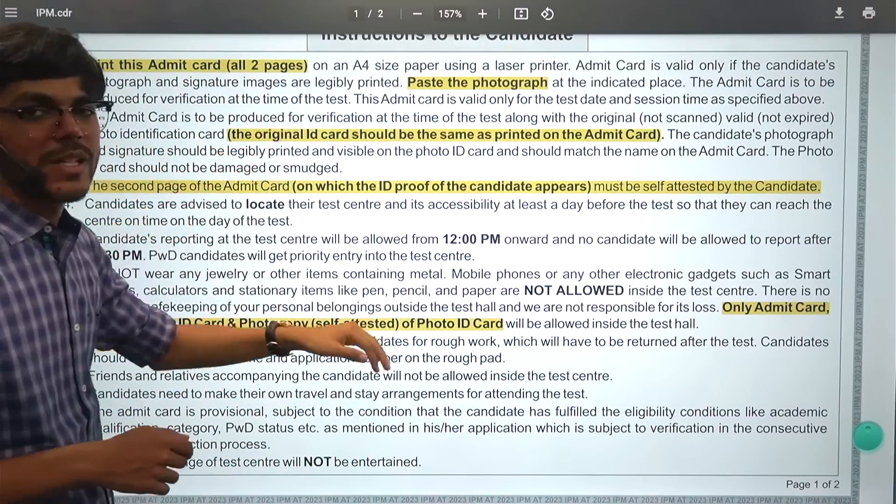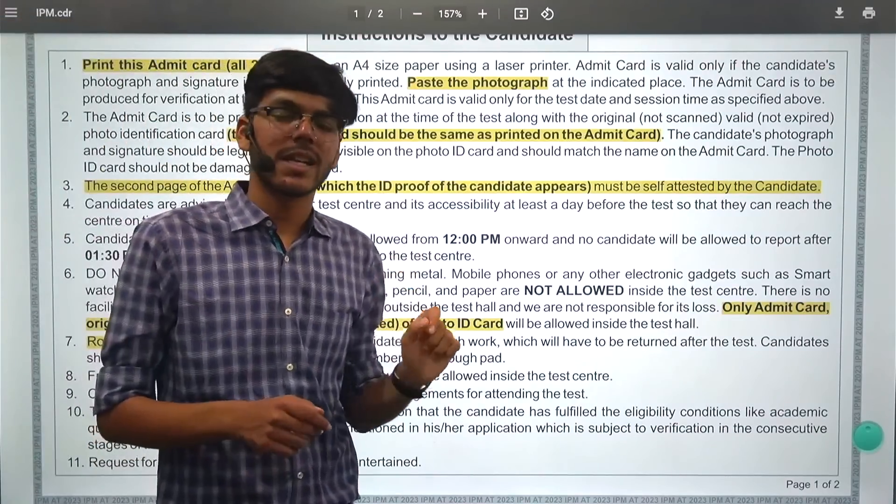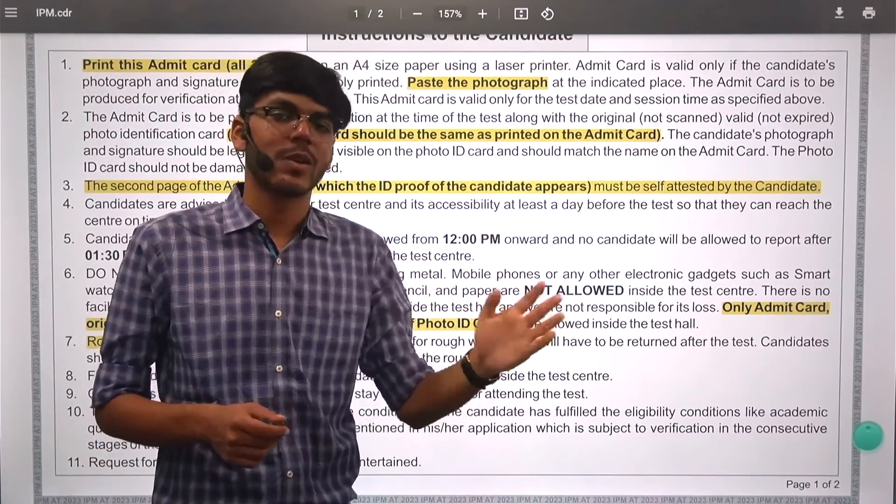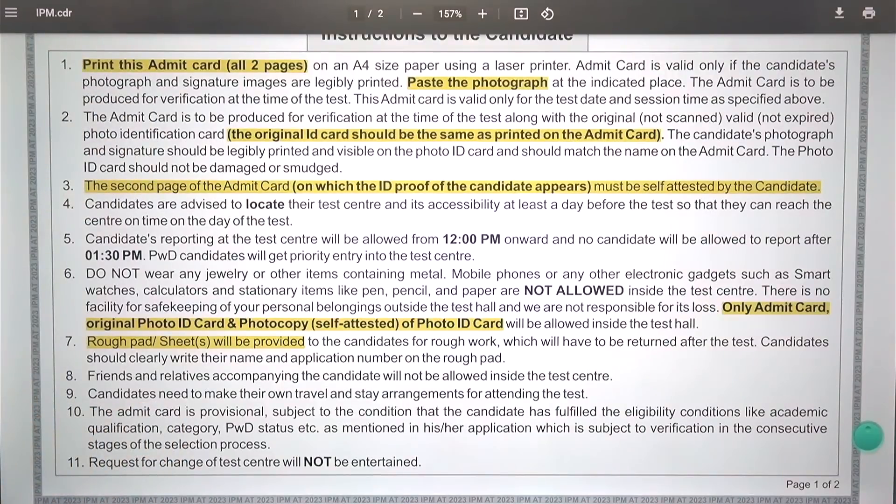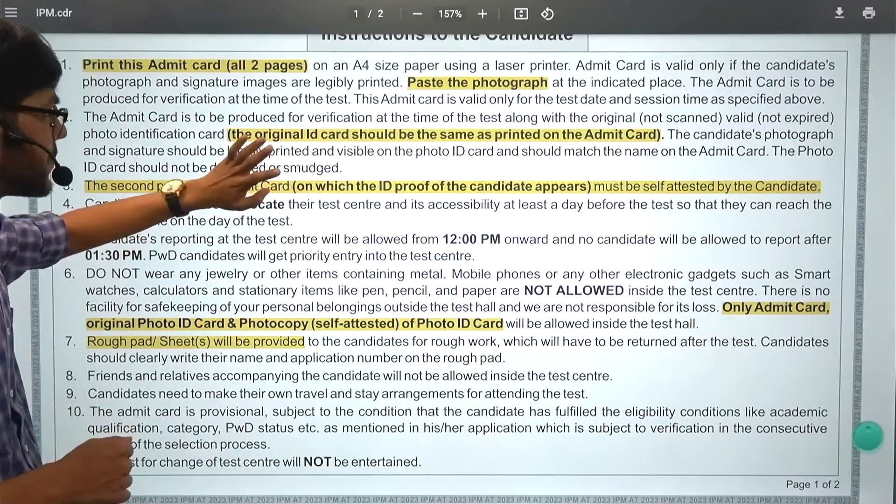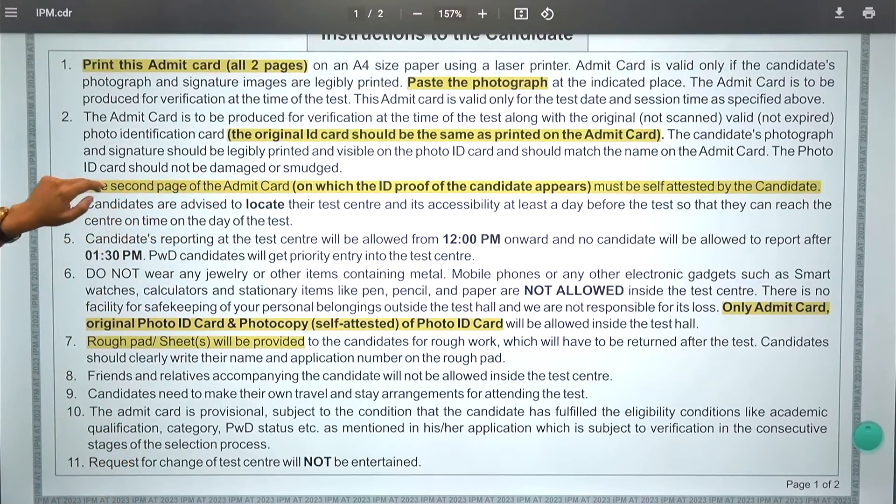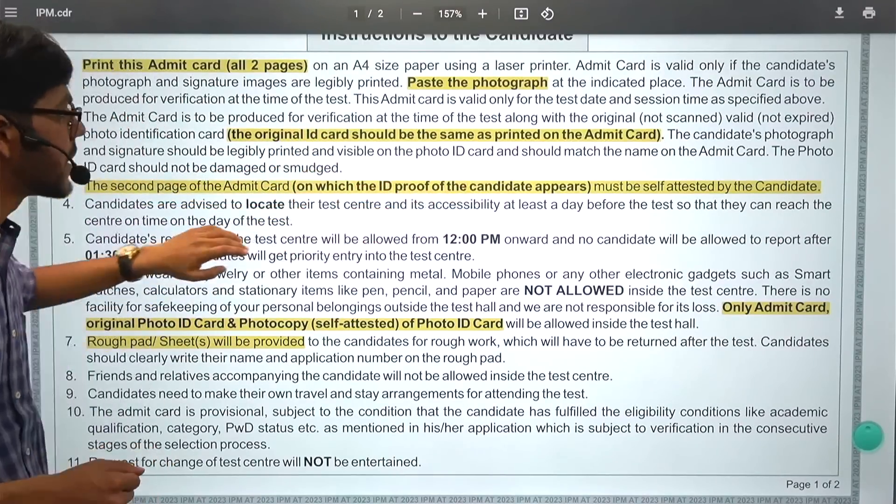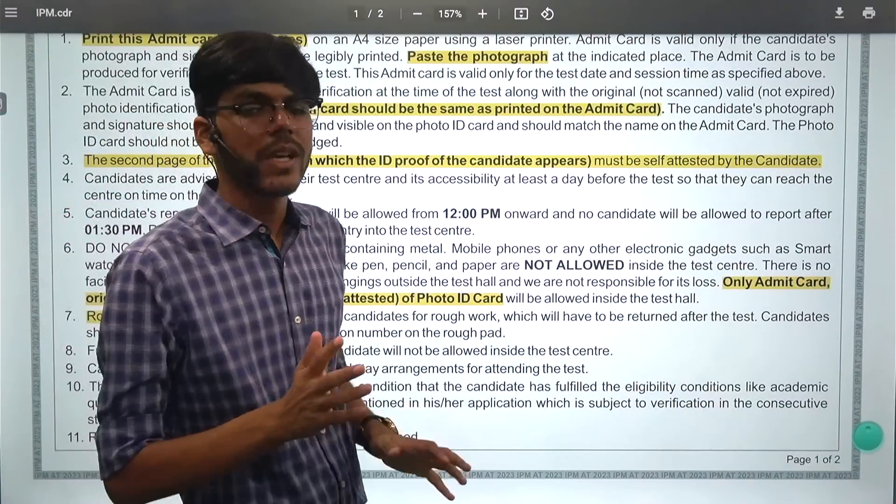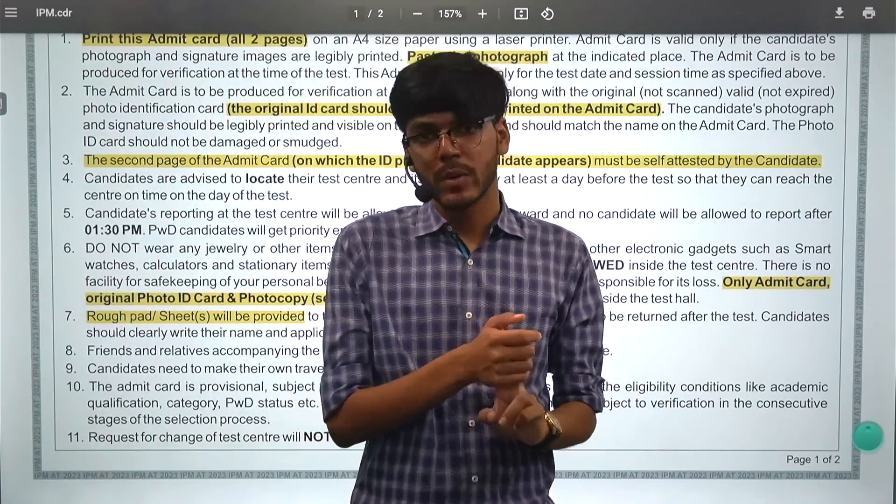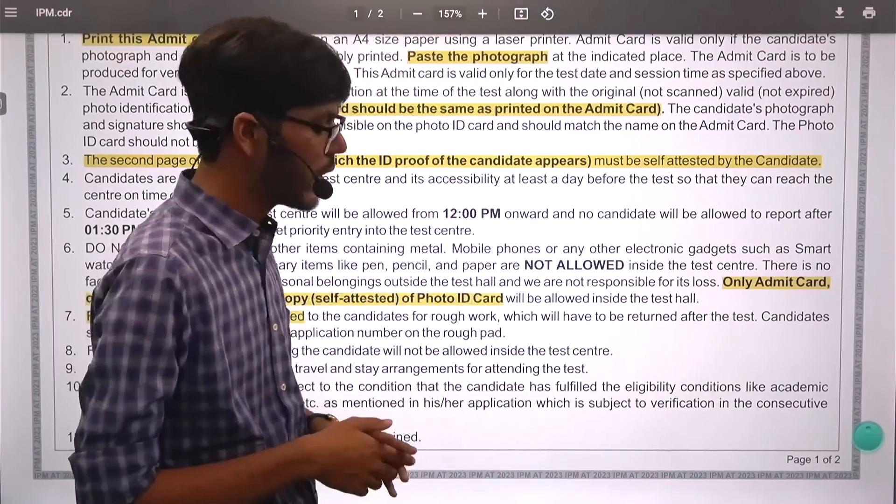That is what you should be doing in this case. On the second page, you have self attest, so you have a sign in a cross format, so that will be there. After that, what I have told you is that it will remain self attested. You will not have pen or paper or anything, you will not have additional pen, they will provide paper for your rough work, you don't have to worry about that.